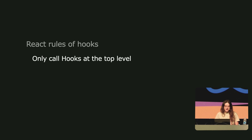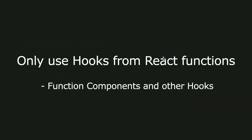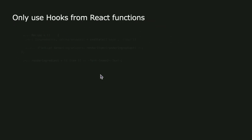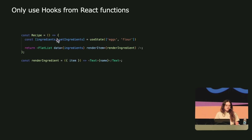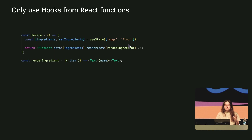Enough about rules of React — let's go back to our rules of hooks and tackle the second rule. To break this one — only use hooks from React functions, so function components and other hooks — we're going to go into the wonderful world of React Native. Our recipe is now going to have several ingredients that we'll display in a FlatList. A FlatList, just like Text, is a core component provided by React Native. A FlatList acts kind of like a map: you provide it with an array of elements and a render function, and it maps over the array and calls that render function for each element to display it on screen.